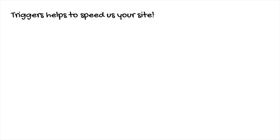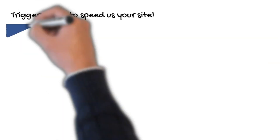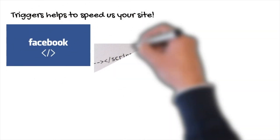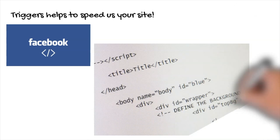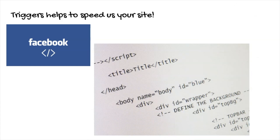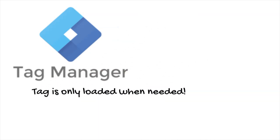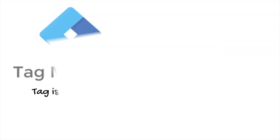Triggers also help speed up your website. Traditionally, if you implement a tag directly in your website's head section, the JavaScript will load every time on your website. However, with a tag management system like Google Tag Manager, you are only invoking that particular tag when a specific event happens — when the trigger fires.